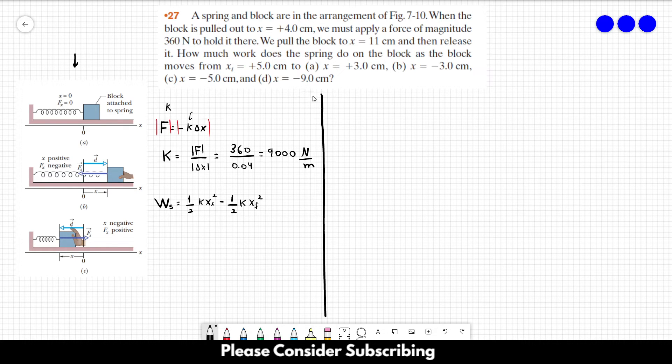We just replace the values with numbers. For part (a), the work done by the spring equals—let's simplify—1/2·k·(x_i² - x_f²). This is 1/2 × 9000 × (0.05² - 0.03²), which gives us 7.2 joules.